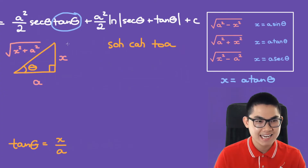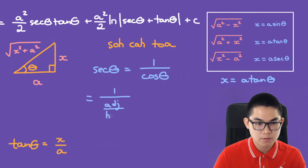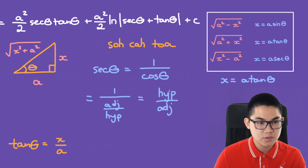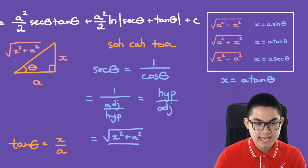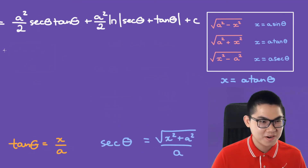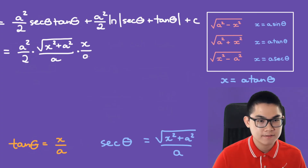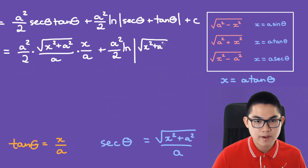We know tan is x over a. For secant: secant is 1 over cosine, and cosine is adjacent over hypotenuse, so secant equals hypotenuse over adjacent, which is the square root of x squared plus a squared, all over a. Substituting back, we have a squared over 2 times secant — which is the square root of x squared plus a squared over a — times tan, which is x over a. Plus a squared over 2 times the ln of secant plus tan, where secant is the square root of x squared plus a squared over a and tan is x over a.